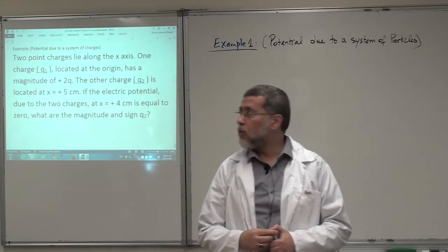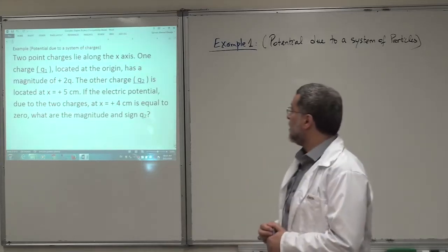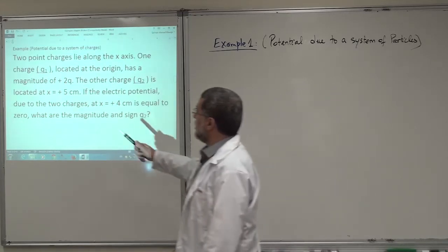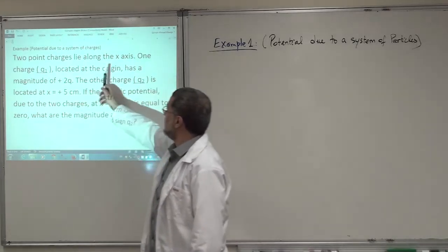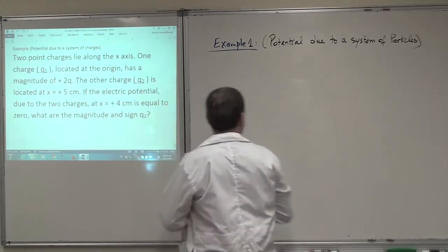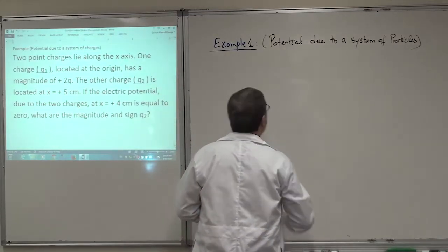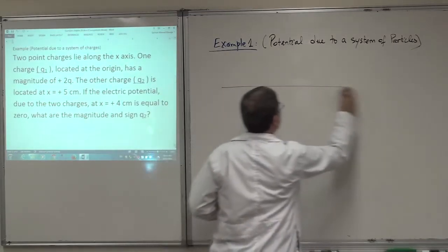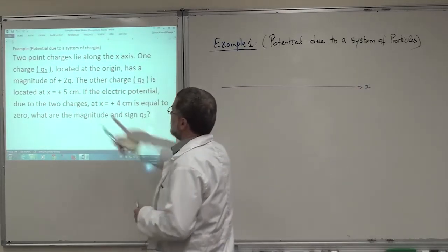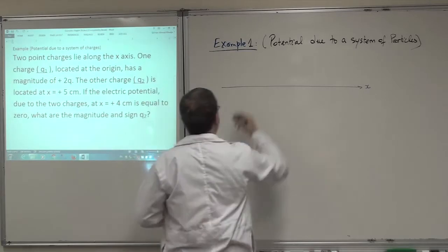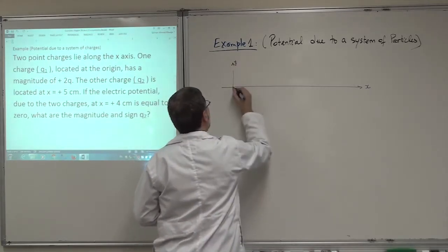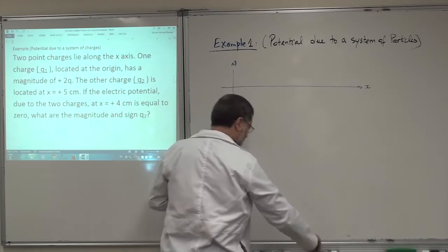Okay, now we are going to look at this example from the exams. It says two point charges lie along the x-axis. So the first thing you have to do is draw your x-axis here. You need two charges. One of them is Q1, okay, at the origin. If this is my y-axis, that's the origin here. So I have a charge here, Q1.